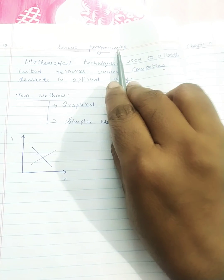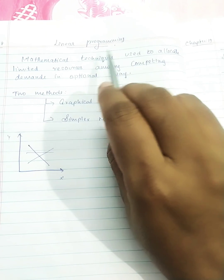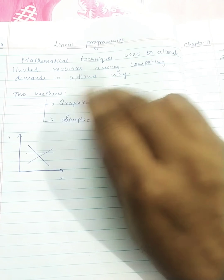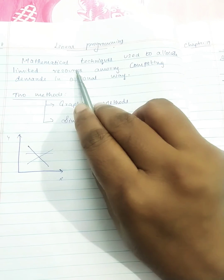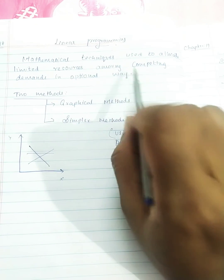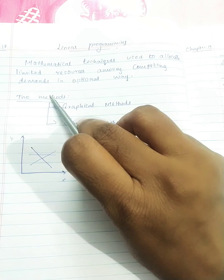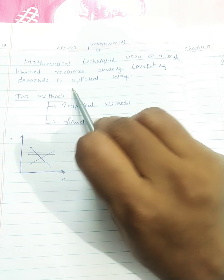First of all, linear programming — a mathematical technique used to allocate limited resources among competing demands in an optimal way.